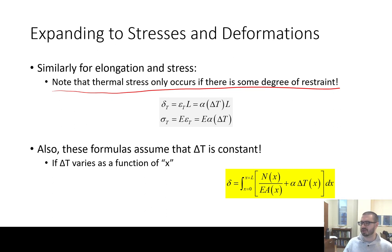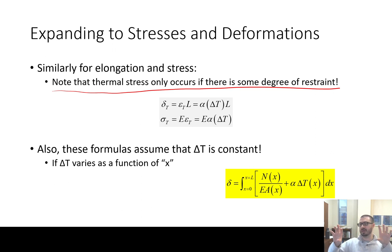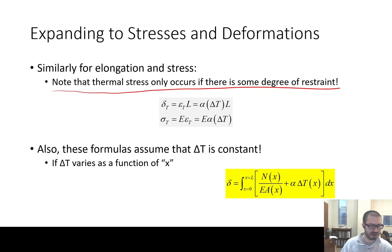It's also worth mentioning that these formulas assume the change in temperature is constant. It's very possible that the temperature varies as a function of x — for example, one side of the member gets hotter than the other. If the change in temperature is variable along the length, you just have to integrate, just as you would before. We'll deal with linear temperature changes, which is not very difficult.